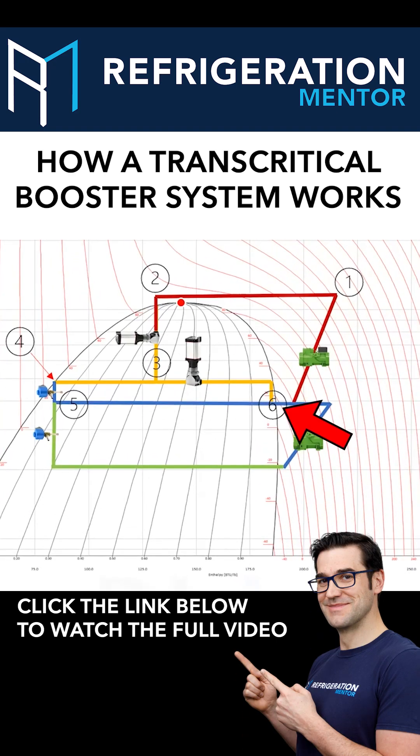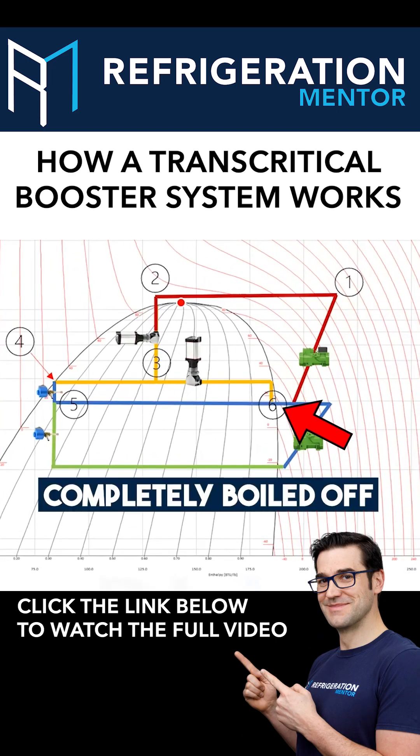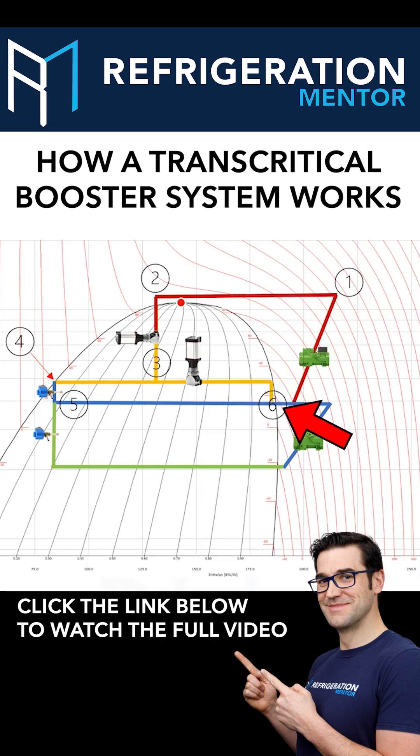Six, this is where the refrigerant has to be completely boiled off. You're hitting your dew point line and totally boiling off, so we know those medium temp transcritical compressors are not getting any liquid back to them.